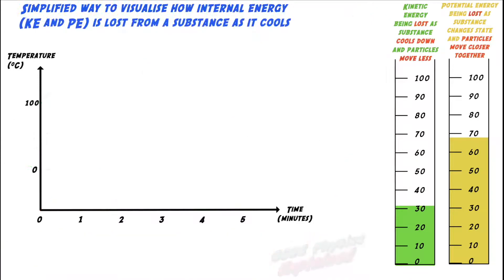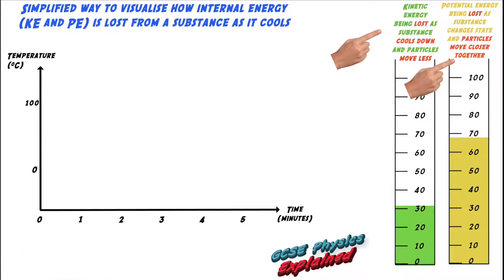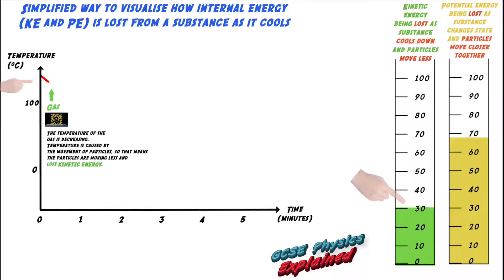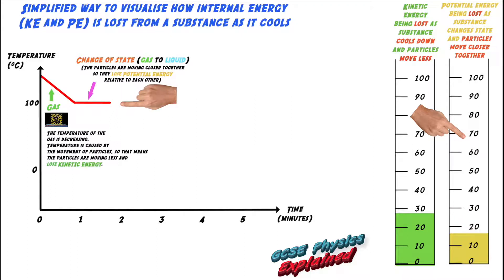I'll quickly show you what the temperature-time graph looks like for a substance cooling down, so you can see the kinetic energy and potential energy being lost at each stage. In a nutshell, kinetic energy is lost if the temperature cools down, and potential energy is lost when it changes state and results in particles coming closer together.